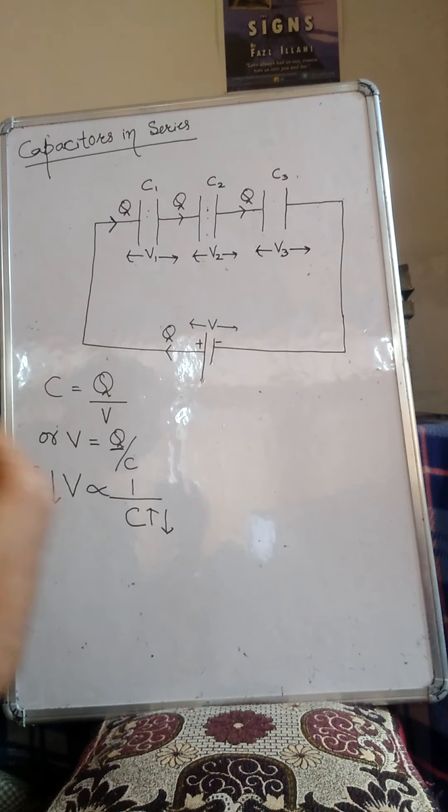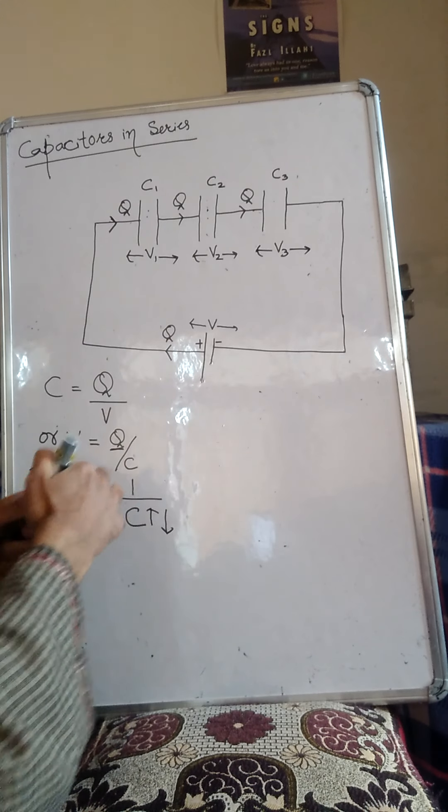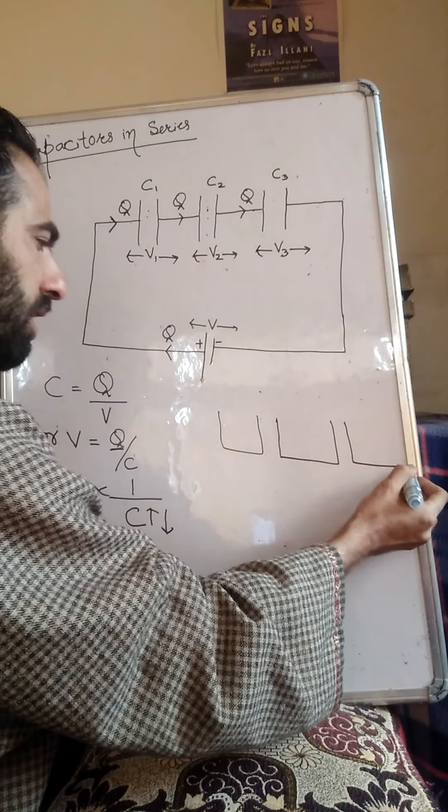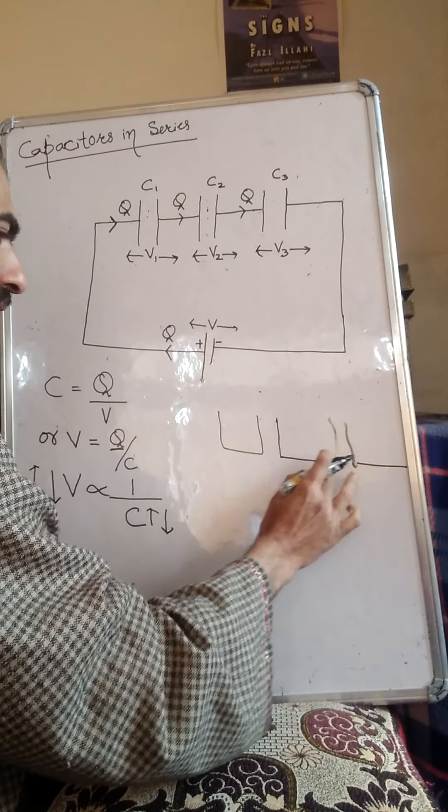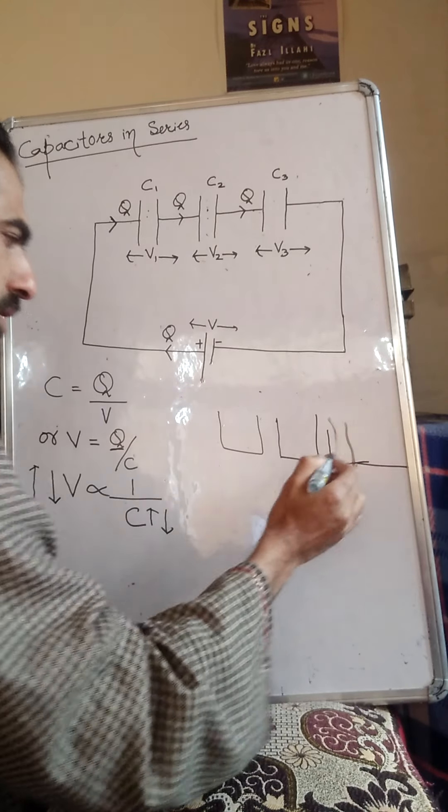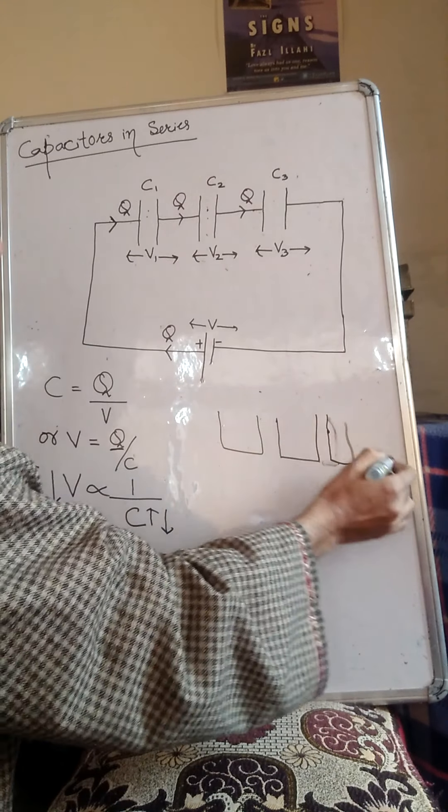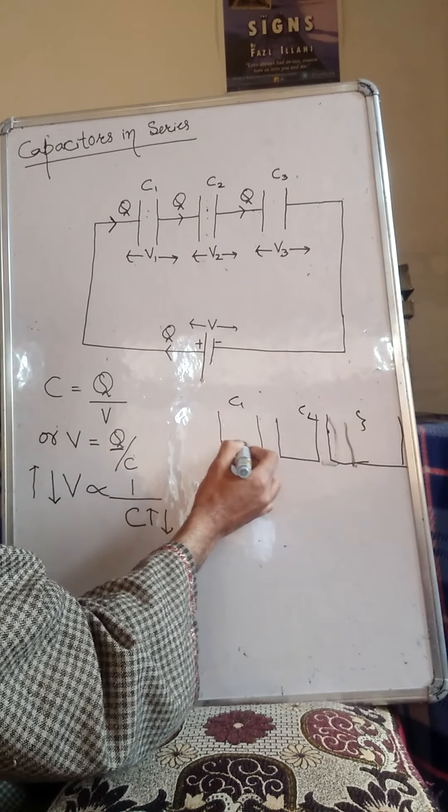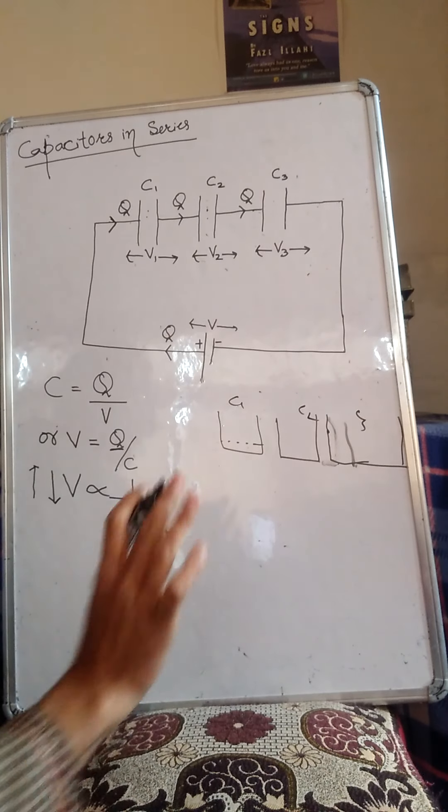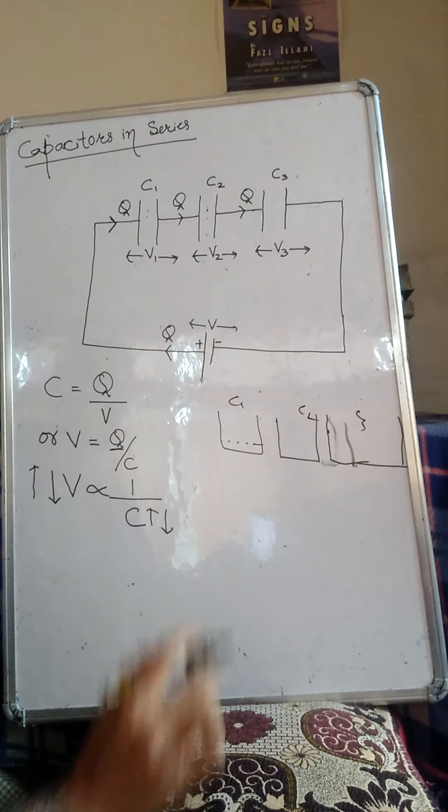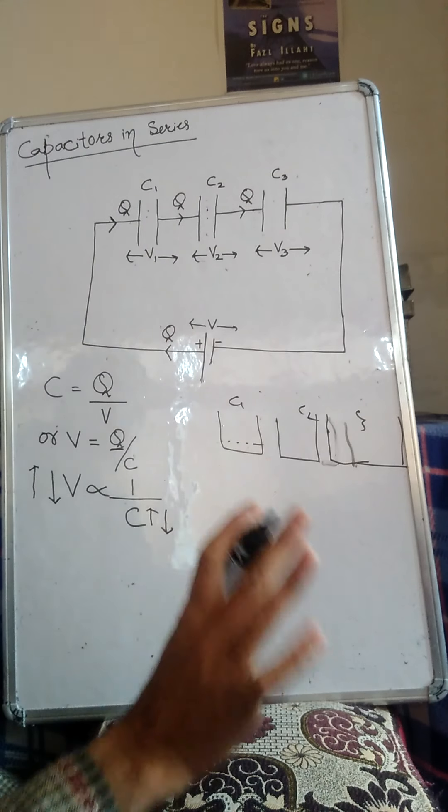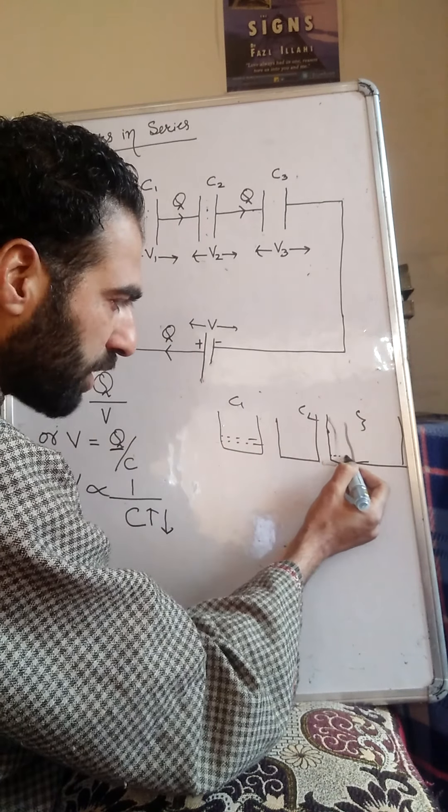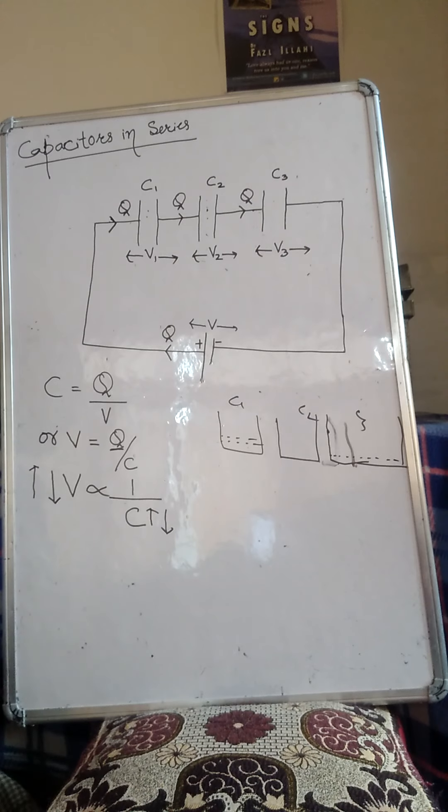It's a logical thing. If you want to understand this in terms of fluid mechanics, take three beakers. Tell me, if the three beakers have different capacitances, C1, C2, C3, and you pour the same quantity of water into all three beakers, will the level rise be the same in all three? No. The level rise will be more in the one with less capacitance. The level rise will be very less in the one with more capacitance. Isn't it? So the same will happen here.